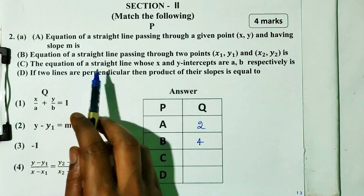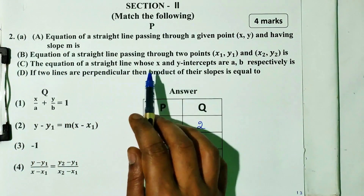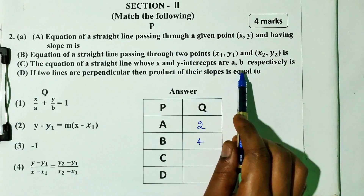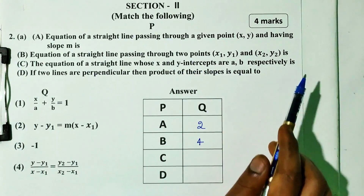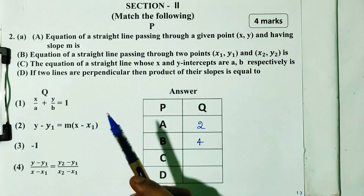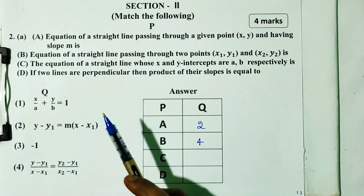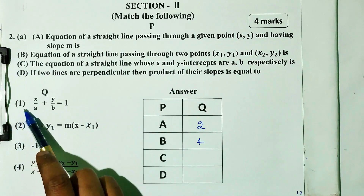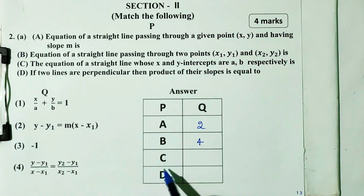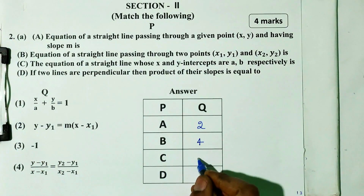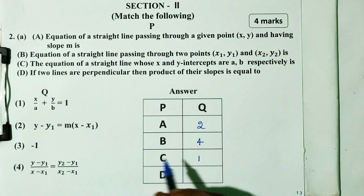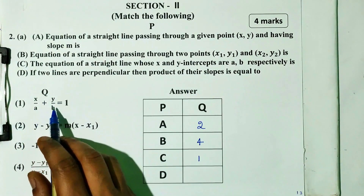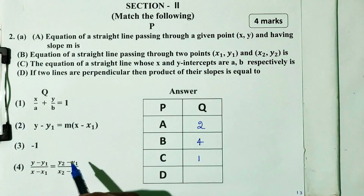Question number c: the equation of straight line whose x and y intercepts are a and b respectively. This is the intercept formula. Option c answer is option 1. That is x by a plus y by b is equal to 1.